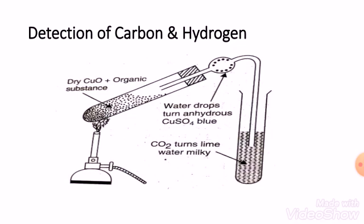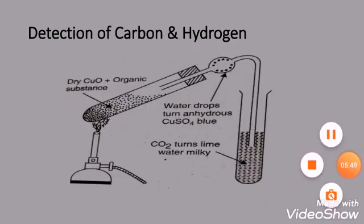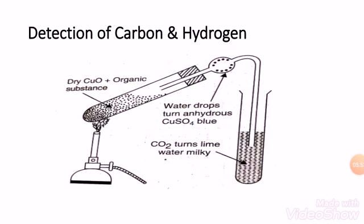As you can see in the diagram, inside the test tube you have your compound and cupric oxide. When heated, the sample and cupric oxide are converted into carbon dioxide and water. Carbon dioxide is a gas lighter in weight than water, so it travels to the end of the tube and into the second test tube containing lime water. If the lime water turns milky, carbon is confirmed as present in your analyte.